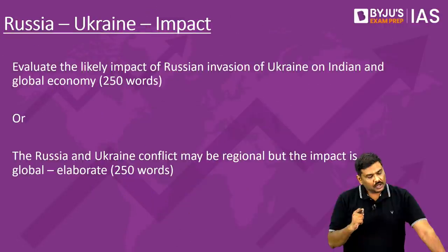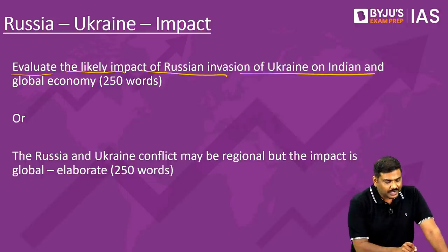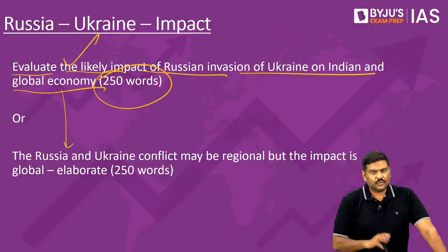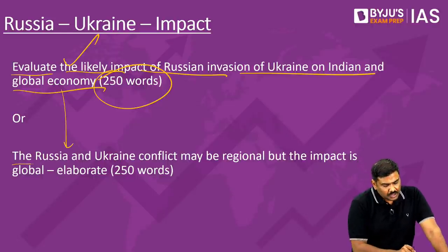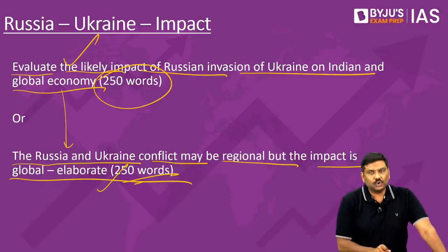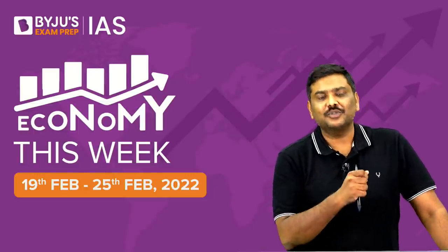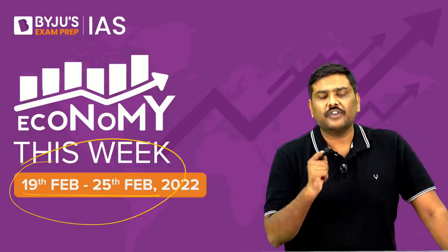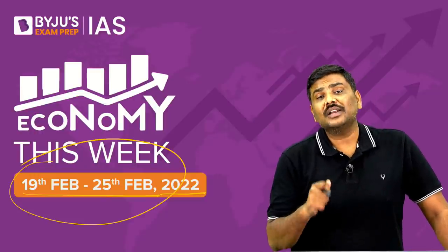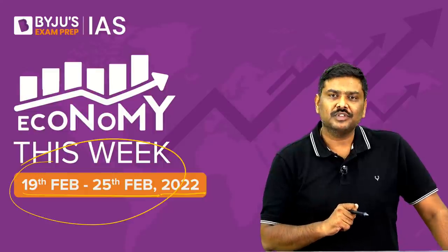Based on this, a likely exam question could be: 'Discuss the economic impact of Russia-Ukraine conflict on India and the global economy in 250 words.' The question could also be framed as: 'Russia and Ukraine conflict may be regional but the impact is global — elaborate in 250 words.' These are the various articles and questions related to the period 19th to 25th February 2022. Please like, comment, subscribe to Baijiu's Exam Prep IIS.